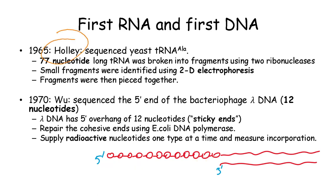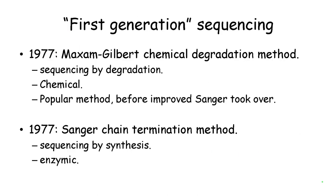Holley's method is called sequencing by degradation — we break apart a DNA molecule to find out which nucleotide is present at a position. Wu's method is called sequencing by synthesis — we try to incorporate each of the four nucleotides and see which one gets incorporated. The sequencing by degradation and sequencing by synthesis strategies were improved to form the first generation of sequencing methods.